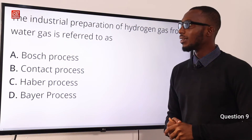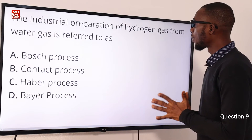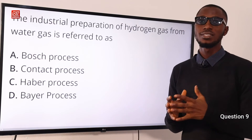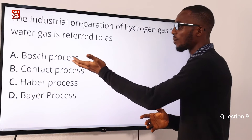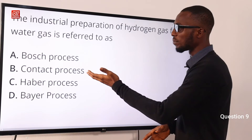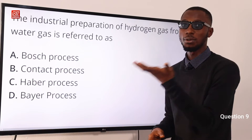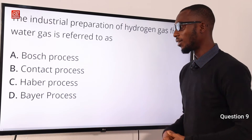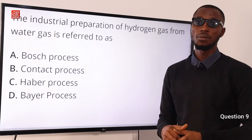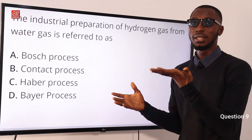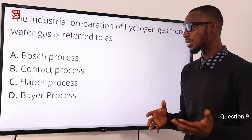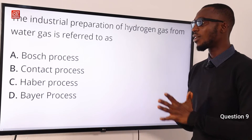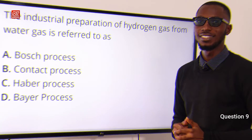Question 9. The industrial preparation of hydrogen gas from water gas is referred to as what? It is referred to as the Bosch process, option A. Option B is for sulfuric acid, the Haber process is for ammonia, and the Bayer process is for getting alumina from bauxite. So the correct option here is option A, the Bosch process.